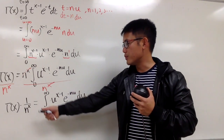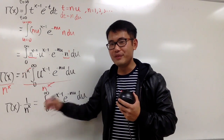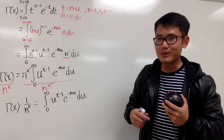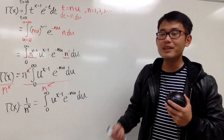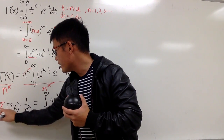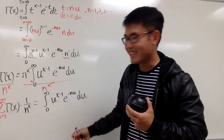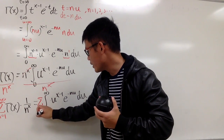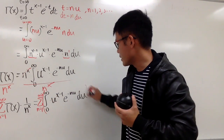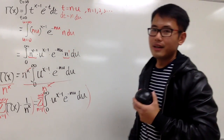Why did I do that? Well, when you have 1 over n to the x power, and you take the sum from n equals 1, 2, 3, and so on — n from 1 to infinity — you get the theta function. So we will take the sum when n goes from 1 to infinity on both sides.